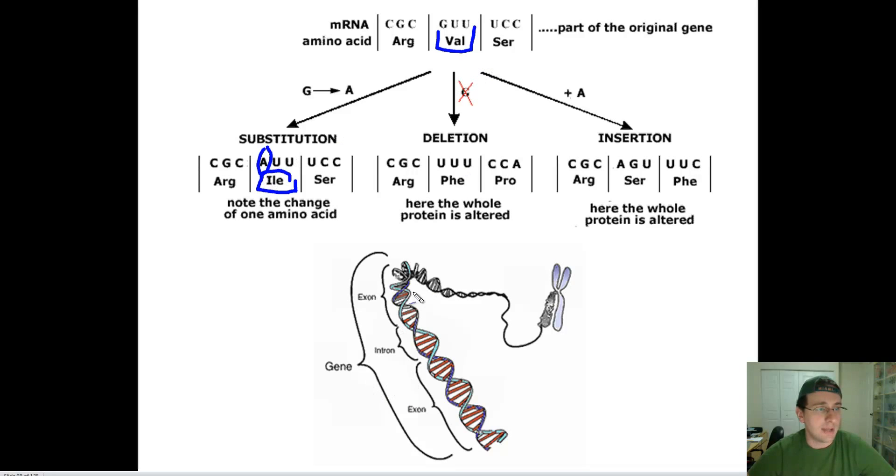Notice a deletion. You deleted the G, and so you shifted the entire code this way. Instead of ending with the C, the A which was sitting over here is where it's going to end up with. You might change the entire protein from now on because you didn't change just this one amino acid. You shifted the entire code one base over, changing every single amino acid from here on.